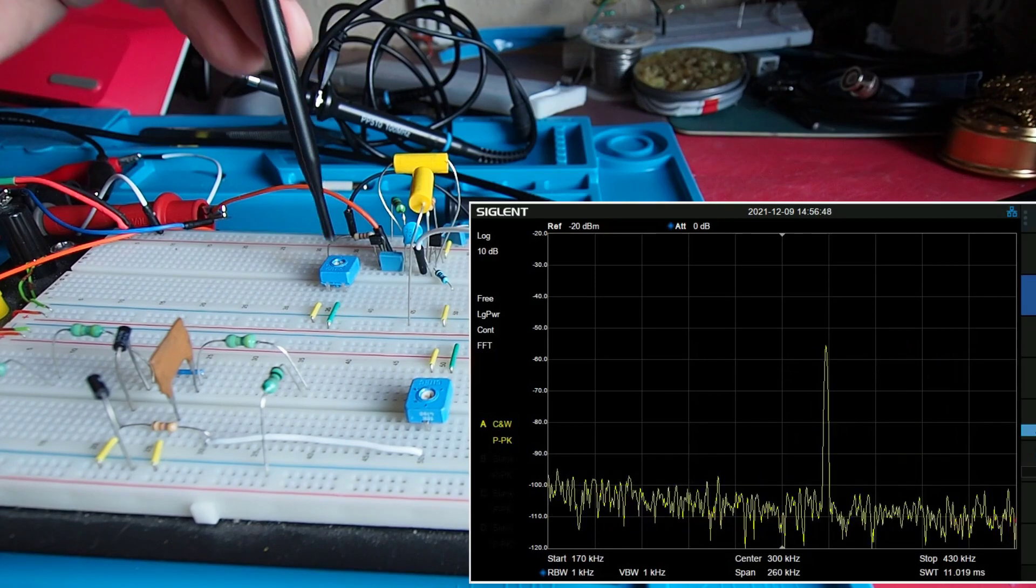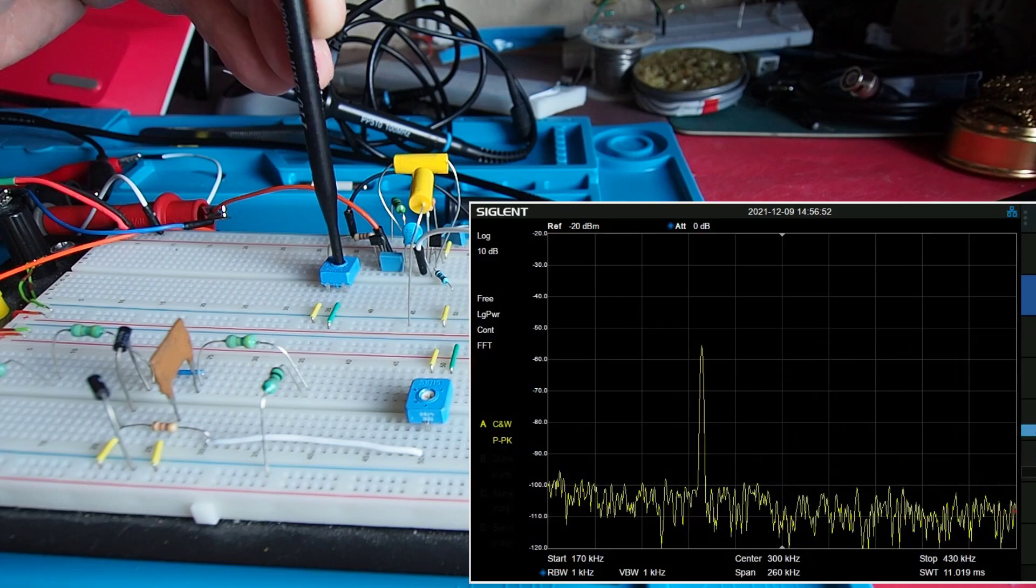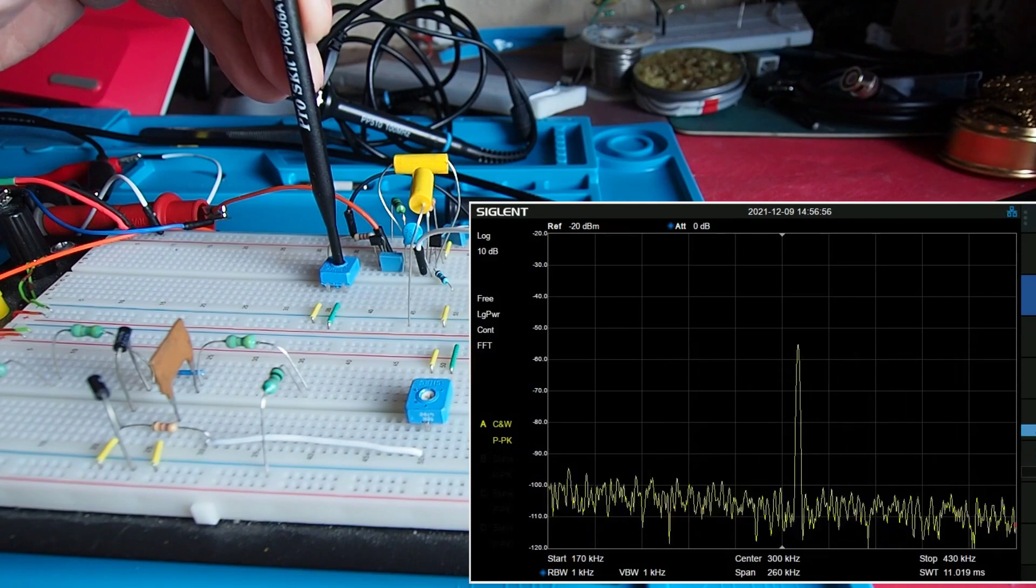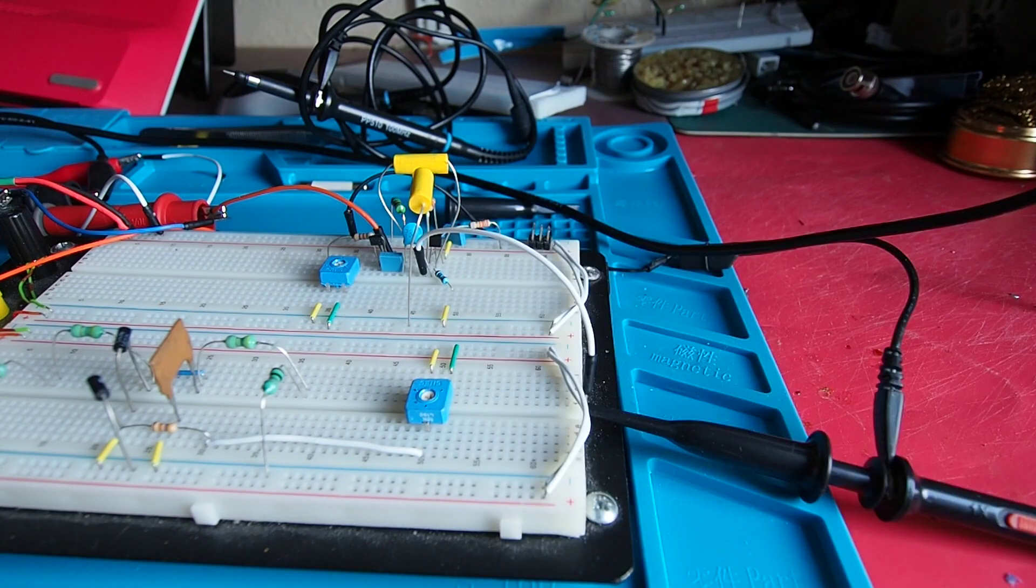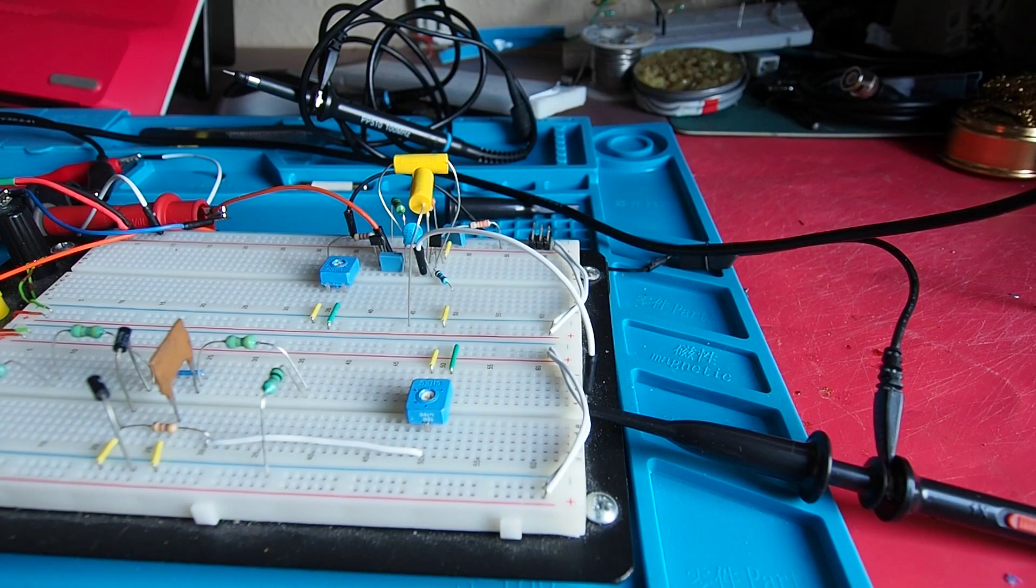So that's the varactor doing its job rather well and that's a voltage controlled oscillator which is a very common component in a lot of homebrewed amateur equipment. Okay I'm just going to reconfigure that circuit and then we'll have a look at another use for this kind of circuit.